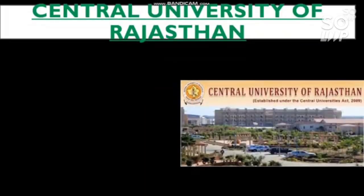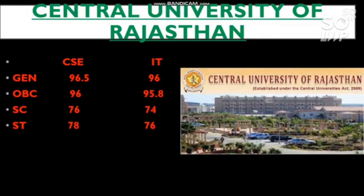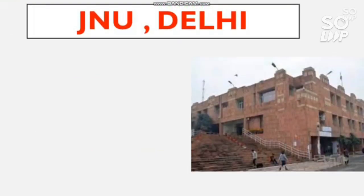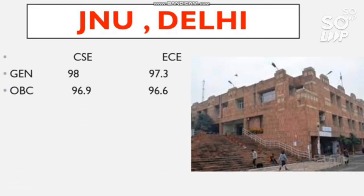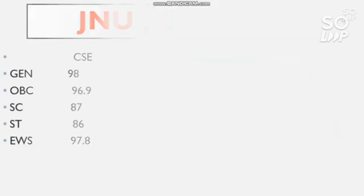The next GFTI is Central University of Rajasthan. The cutoff for CS is 96.5 for General, and for IT it is 96. For OBC: 96 and 95.8. For EWS: 97.2 and 97.9 percentile. For SC: 87 and 80. For ST: 86 and 82. EWS also shows 97.8 and 97.2 percentile required.